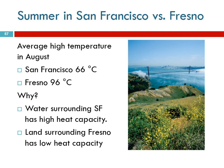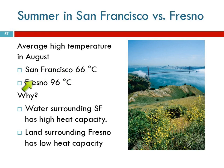Summer in San Francisco versus summer in Fresno — where would you rather be? San Francisco. The average high temperature in August in San Francisco is 66 degrees Fahrenheit. In Fresno, the average high is 96 degrees — a 30 degree difference. And oftentimes it's well above 96, more like 106.